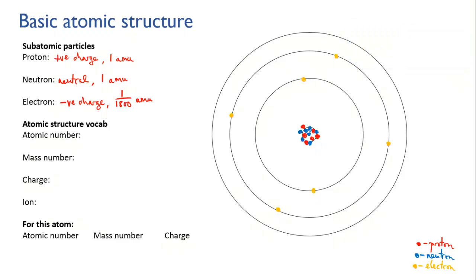Let's bring in a few useful terms. The atomic number of an atom is simply the number of protons that it has. It also happens to be the way in which atoms are arranged in the periodic table — they're ordered by atomic number.